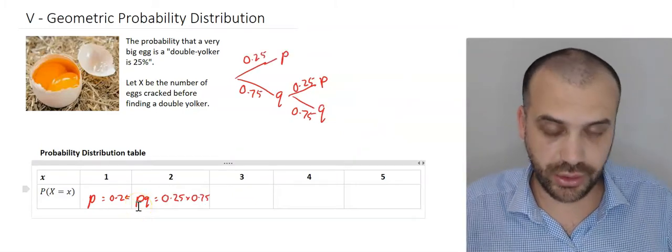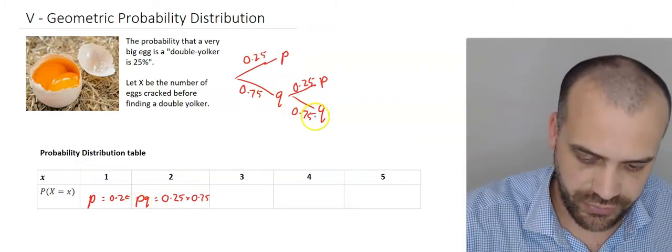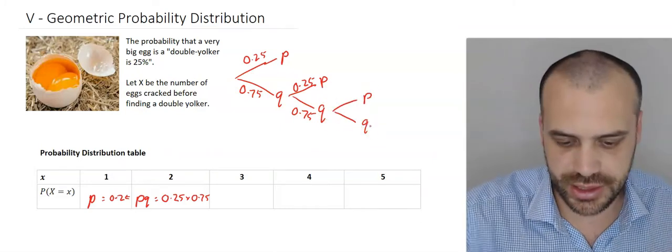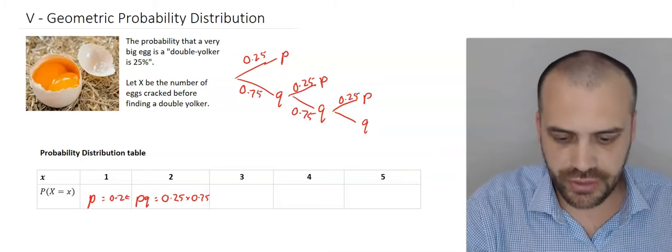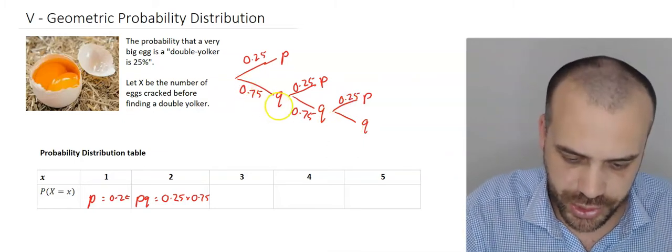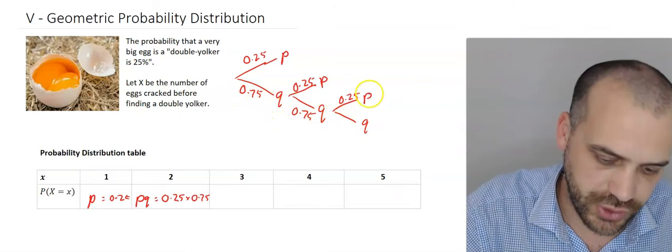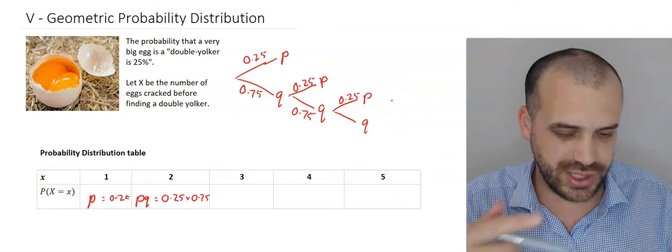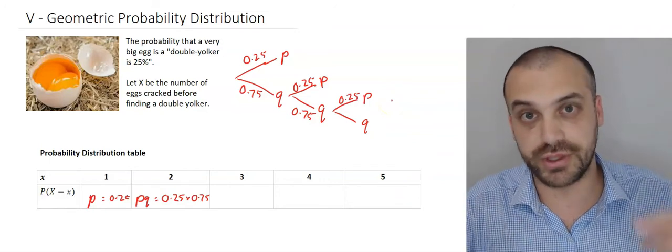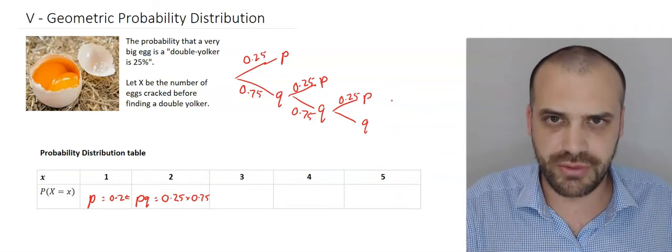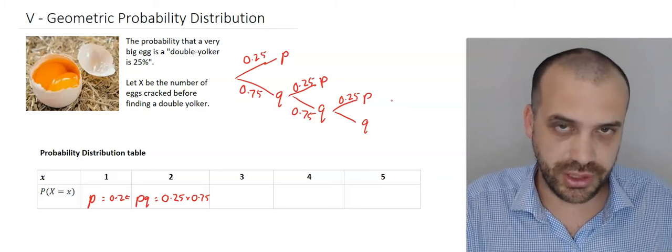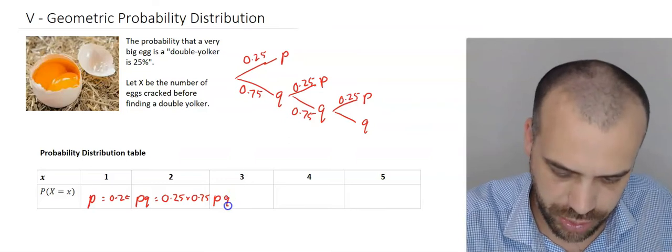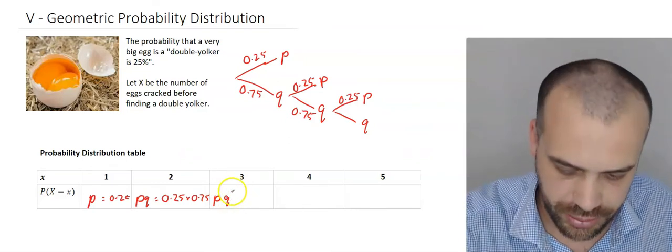The probability of getting it on our third try, we failed, we failed, and then our third try, we get a success. So 0.25. For that branch to happen, it's 0.75 times 0.75 times 0.25. 0.75 times 0.75 is the same as 0.75 squared. 0.75 is just Q, the probability of failure. So what we have here is the probability of success times the probability of failure squared, P times Q squared.